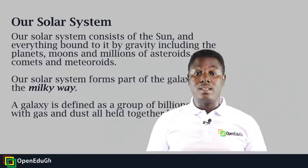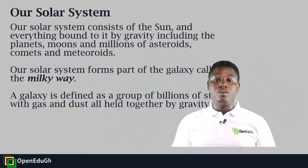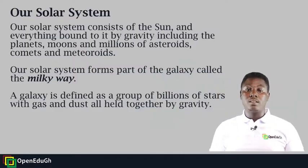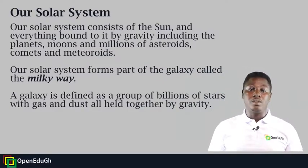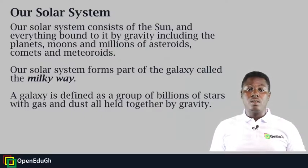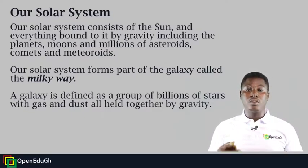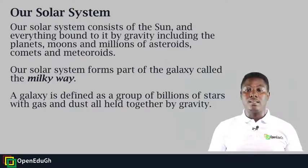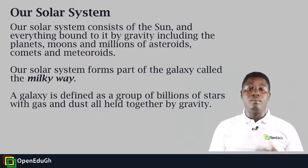Our solar system consists of the sun and everything bound to it by gravity, including the planets, dozens of moons, and millions of asteroids, comets, and meteoroids. The solar system forms part of the galaxy called the Milky Way. A galaxy is defined as a group of billions of stars with gas and dust all held together by gravity.